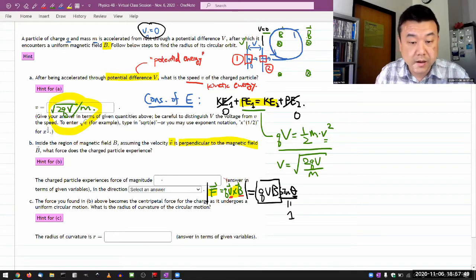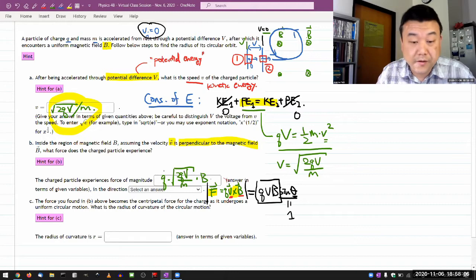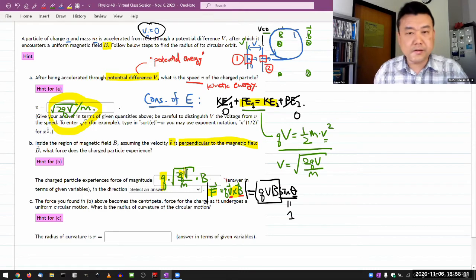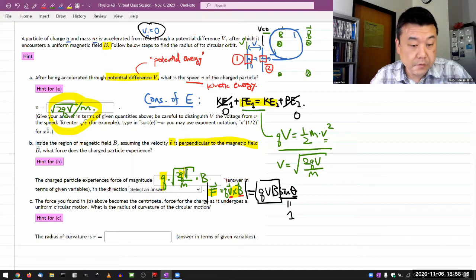So I just write down q, and my expression for velocity, square root of 2q capital V over m times magnetic field B. And you could simplify it, I see two instances of q, but the system won't enforce it. So I'm just going to leave it at that.